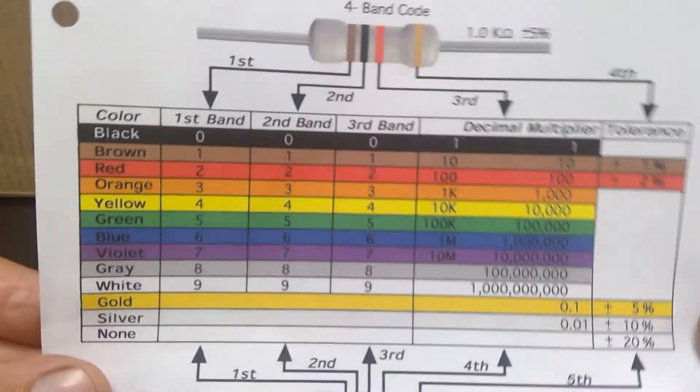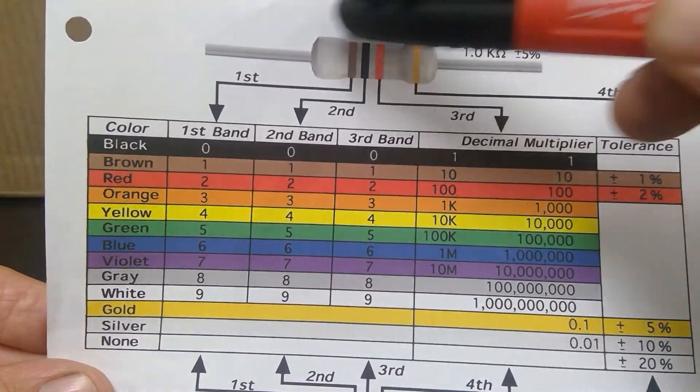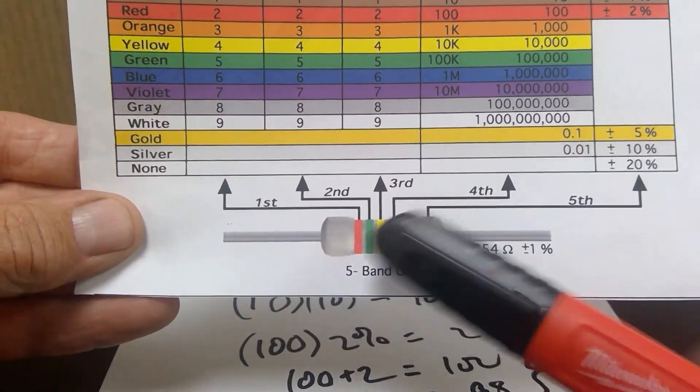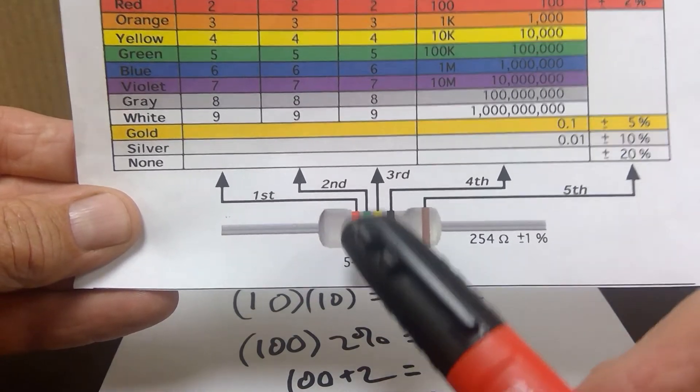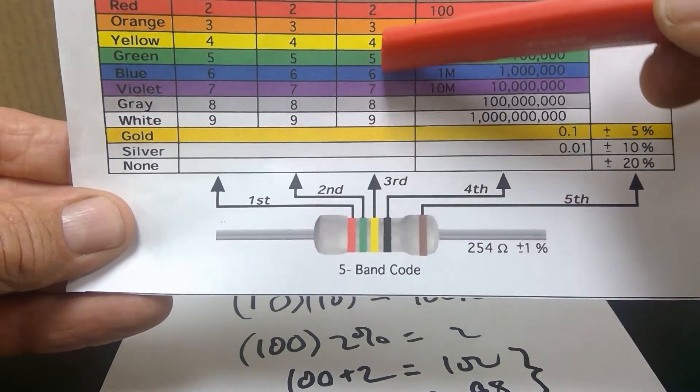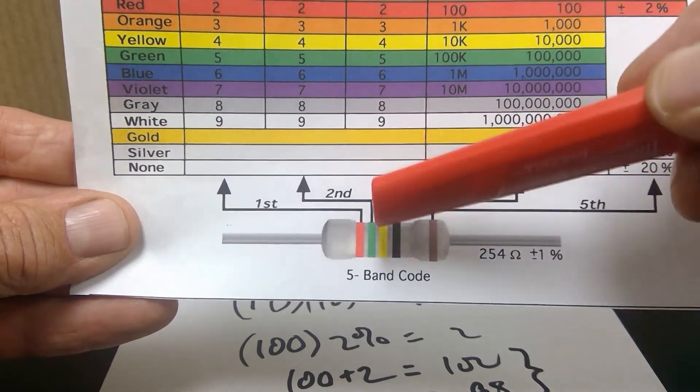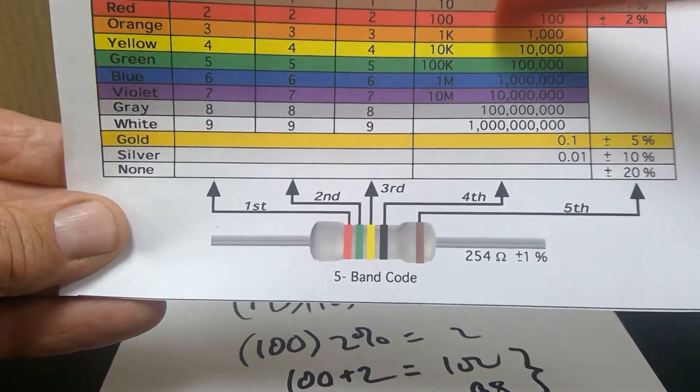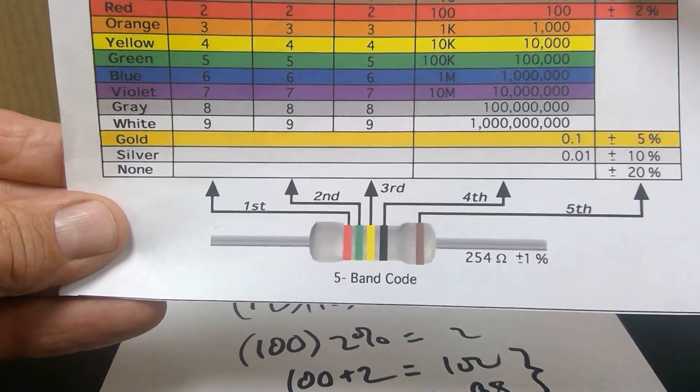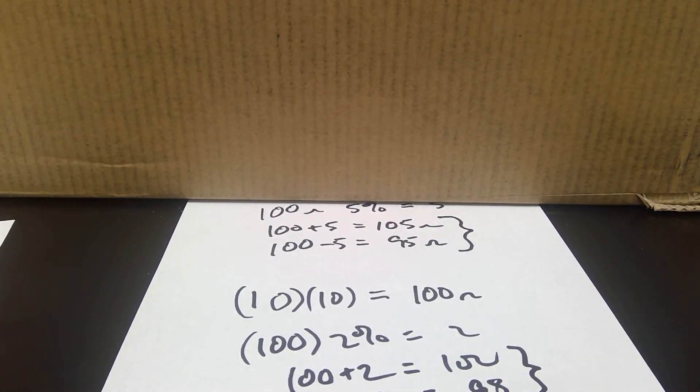So that's it. Decoding resistors is really not difficult. Now, I do want to point out, that we've dealt with these four bands. There are five band resistors out there, and we deal with them exactly the same. The difference being is that in a third band resistor, now we use this column, the third band column, to get that number, and it's our fourth band that becomes the decimal multiplier. The tolerance, first and second band, we treat exactly the same.